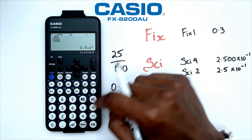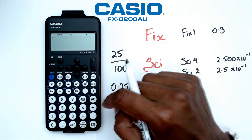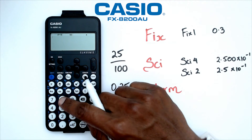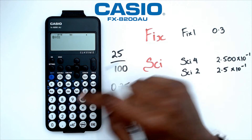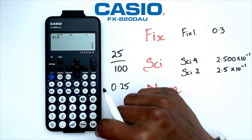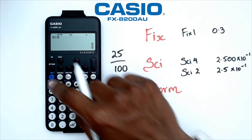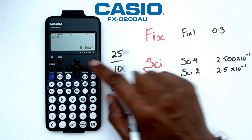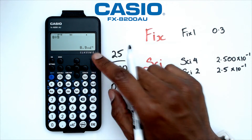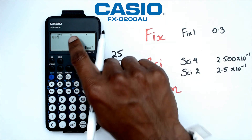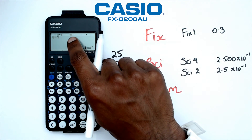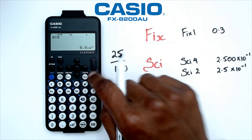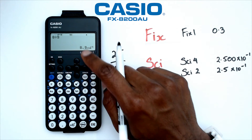Let's say I want to go back and do 8 divided by 9. If I go shift EXE — I'm getting it in this particular notation. That's because the calculator is still in SCI mode.